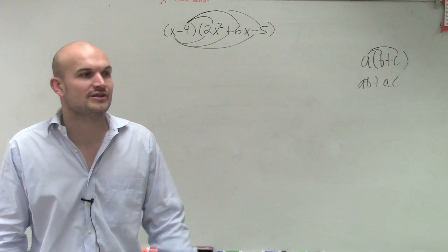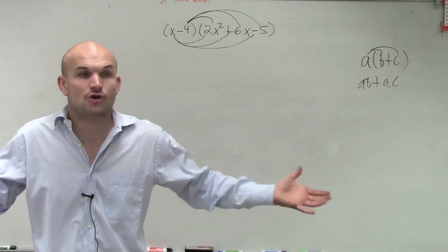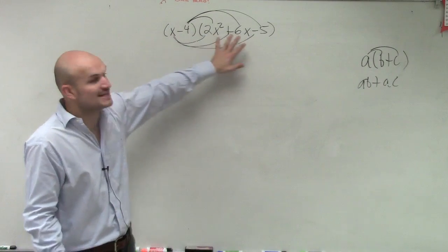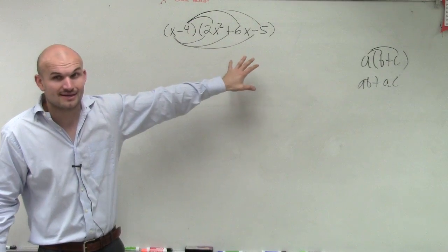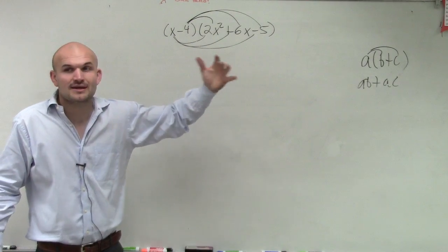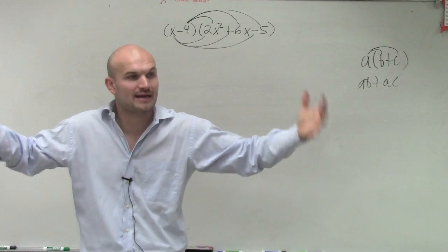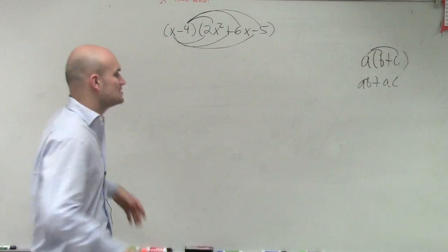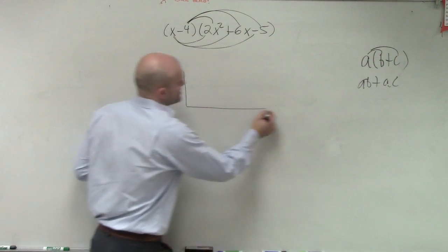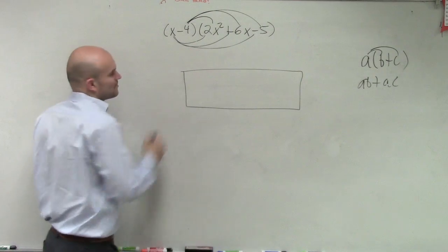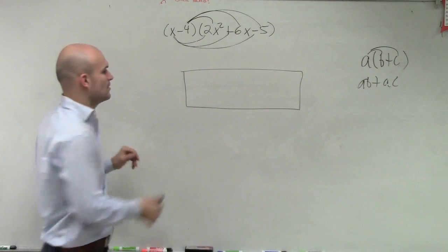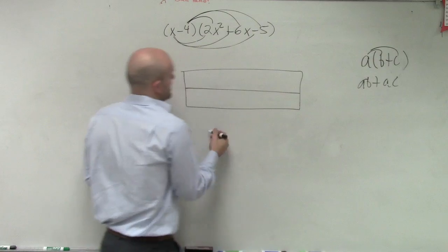and this is where students make mistakes because there's so many multiplication problems. Look, you're multiplying six times, right? And then you're going to try to combine like terms. Students are going to make a mistake because you're not going to be able to have everything organized. So the best way I like to organize, and you guys could have done this with the last problem, but the best way I like to organize is to make a box.